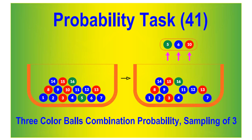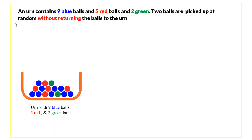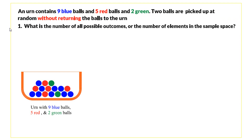In this video we will study three-color balls combination probability with sampling of three. An urn contains nine blue balls, five red balls, and two green balls. Two balls are picked up at random without returning the balls to the urn. The question is: what is the number of all possible outcomes, or the number of elements in the sample space?